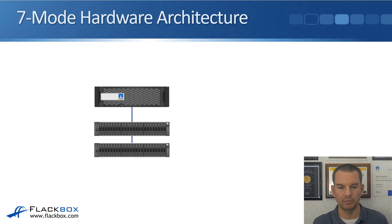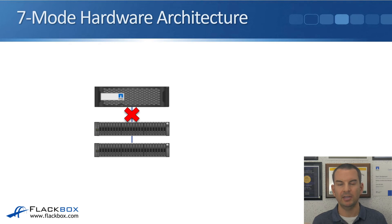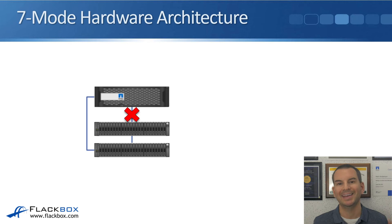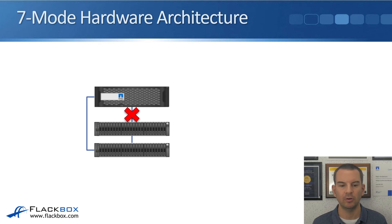Looking at the diagram, there's a single point of failure for connectivity to the disk shelves — if any cable fails, we lose connectivity to all disks below that point. To get redundancy, we add a second connection going down to the bottom shelf in the stack. Now if any single cable fails, we can still reach all the disks in the system.